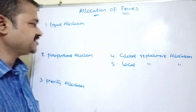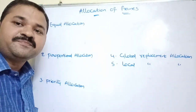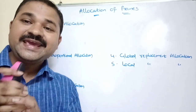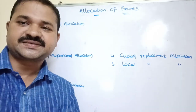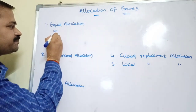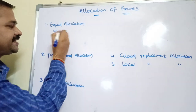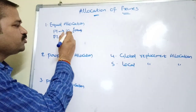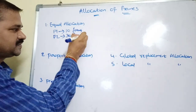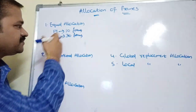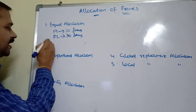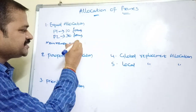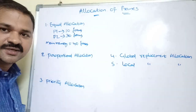Let's see the first approach: equal allocation. The name itself specifies the meaning — frames will be allocated equally among all processes. Assume we have two processes, P1 and P2. P1 requires 10 frames and P2 requires 30 frames for execution. Let the size of the main memory be 40 frames.